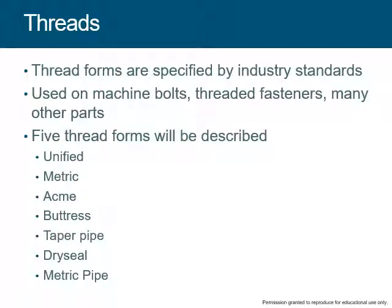We're going to talk about mainly five forms of thread: Unified, the most common here in the U.S.; metric threads, which are becoming more and more common, especially with metric drawings and products; Acme thread for power transmission; buttress thread for power transmission; and pipes have their own special type — taper pipe, dry seal, and metric pipe threads — because you want to seal and not leak.